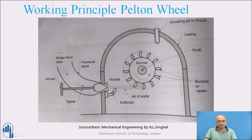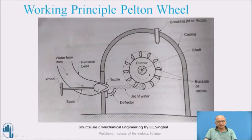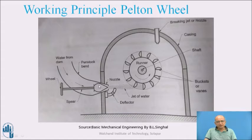Water from the dam comes from one side and goes to the bucket portion through the nozzle. The nozzle is a convergent tapered portion which converts pressure energy into kinetic energy because of the change in cross-section — when water flows from a higher cross-section to a lesser cross-section, there is an increase in kinetic energy at the cost of pressure. When the spear moves outward, there is more flow; when it moves inward, the flow is lesser. Accordingly, we can have control over the rotation of the runner and the turbine.